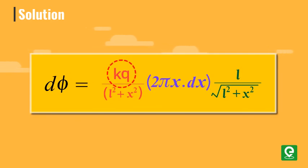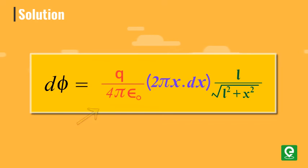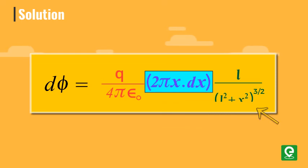Substituting the value of k, the expression becomes d phi equal to q by 4 pi epsilon not into 2 pi x into dx into l by l square plus x square raised to the power 3 by 2.